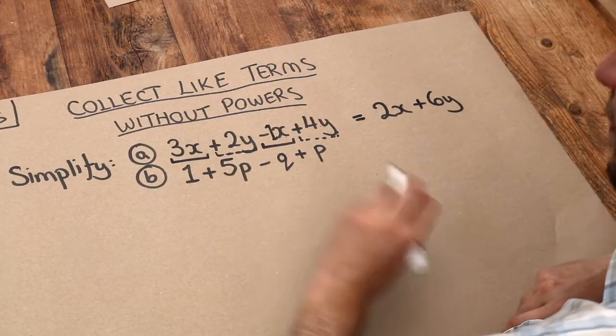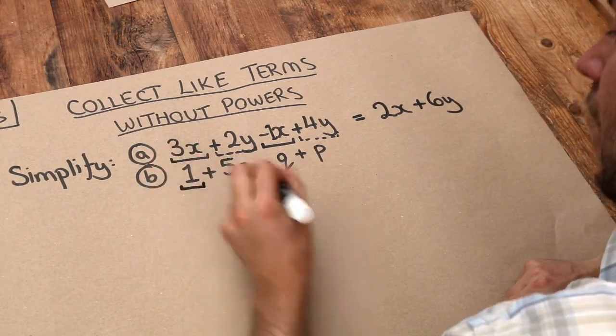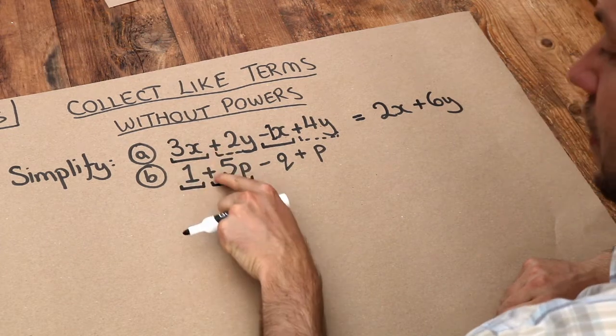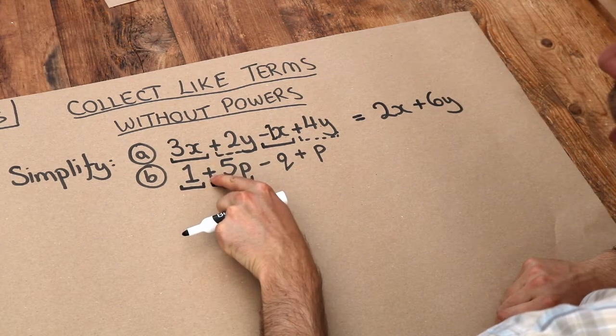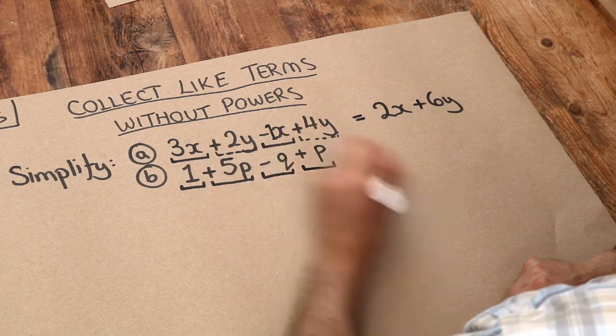What about this one here? Well let's underline each term, and remember I underline each with the symbol, the plus or the minus included in front of it. It's got minus q plus p.